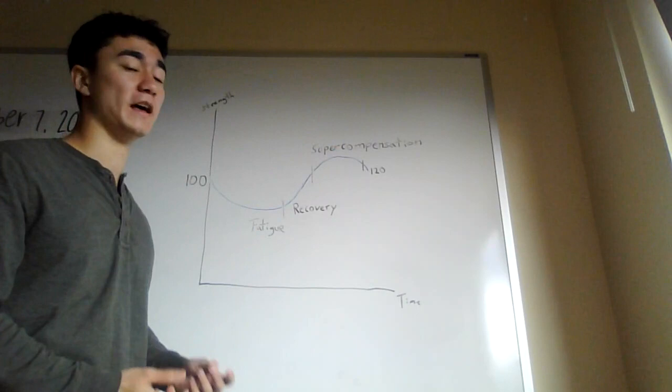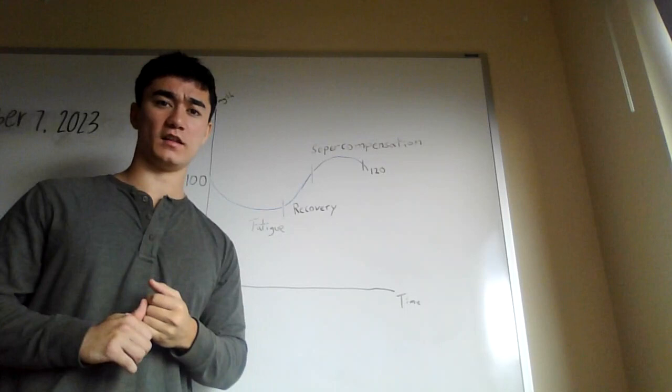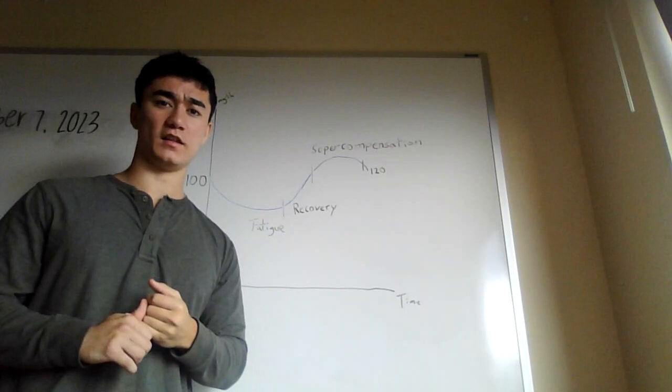So after we go through the super compensation phase where inevitably you're going to become weaker and our bench is going to go from 130 to maybe 120 pounds, the main thing you have to remember is our ending point is still going to be substantially stronger than our beginning point.